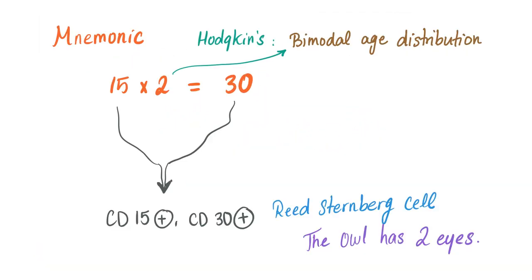Actually, I have two mnemonics for you. Let's start with the first one. Hodgkin's disease has a bimodal age distribution and you have the cells that are CD15 positive and CD30 positive. So what's the mnemonic? 15 times 2 equals 30.